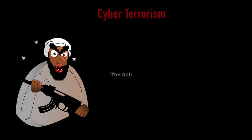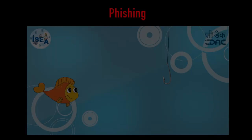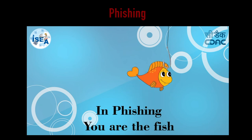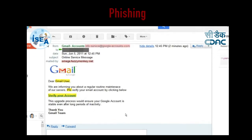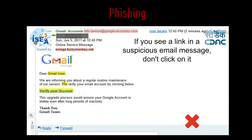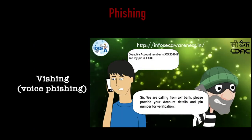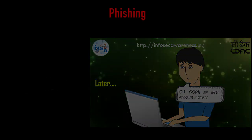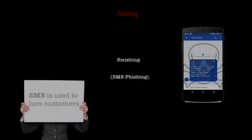Cyber terrorism — it is defined as the use of computer resources to intimidate a government, the civilian population, or any segment thereof in furtherance of political or social objectives. Phishing — it is a process of acquiring personal and sensitive information of an individual via email by disguising as a trustworthy entity in an electronic communication. The purpose of phishing is identity theft, and personal information like username, password, and credit card number may be used to steal money from the user's account. If a telephone is used as a medium for identity theft, it is known as vishing or voice phishing. Another form of phishing is smishing, in which SMS is used to lure customers.